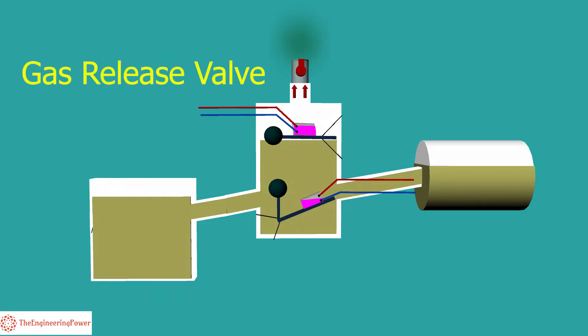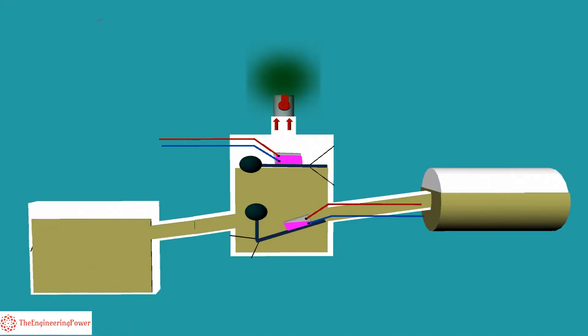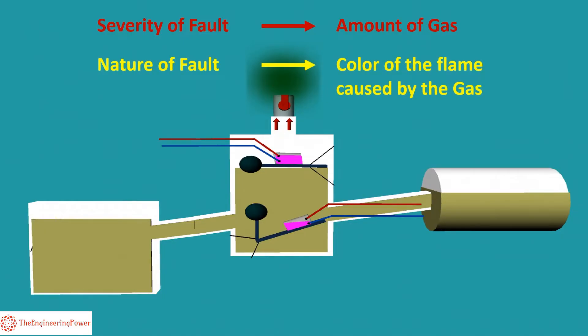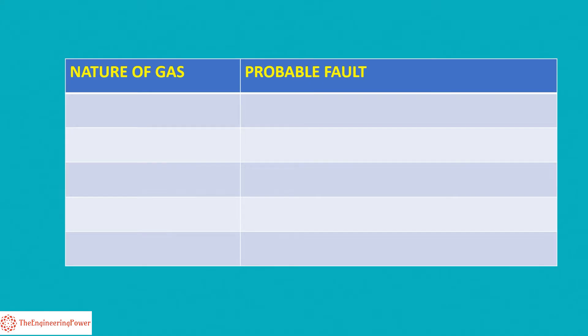The gases are released from the gas release valve on Buchholz relay. The severity of the fault is indicated by the amount of the gas whereas the nature of the fault is indicated by the color of the flame caused by the gas. Some indications are given here.